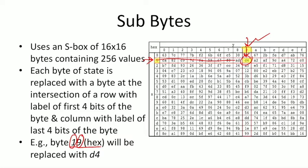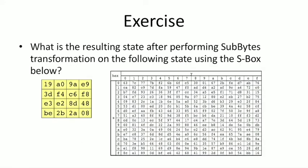The intersection value is D4, so we replace the byte 19 in our state matrix with D4. We repeat this for all 16 bytes in the state matrix, replacing them with 16 new bytes. This substitution table works exactly the same as a Vigenère cipher table — we have row labels, column labels, and all values in the substitution table are hexadecimal numbers, so each entry is one byte.